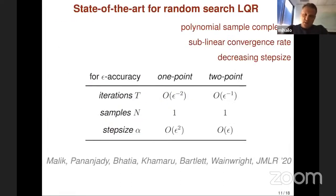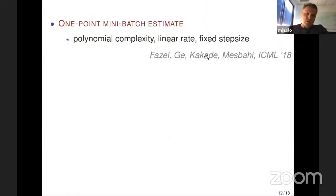I don't have too much time to tell you how this compares to state-of-the-art in the literature, but let me briefly highlight the impressive paper by the UC Berkeley Group, where they compared one- and two-point gradient estimates. They managed to establish polynomial sample complexity, sublinear convergence rate with decreasing step size. This impressive work opened our eyes at many different levels and inspired us to closely examine two-point gradient estimate.